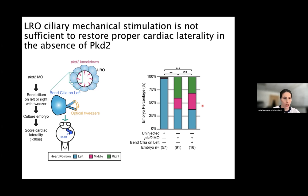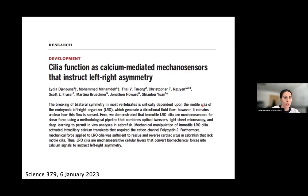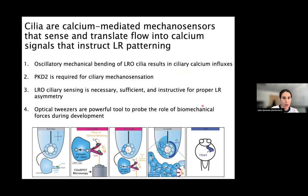For more details I invite you to check the publication we released last year. To summarize, our results highlight that cilia are calcium-mediated mechanosensors that sense and translate flow into calcium signals that instruct left-right patterning. We show that oscillatory mechanical bending of LRO cilia results in ciliary calcium influxes, that the polycystin-2 channel is required for ciliary mechanosensation, and that LRO ciliary sensing is necessary, sufficient, and instructive for proper lateral asymmetry. This also shows that optical tweezers are a powerful tool to probe the role of biomechanical forces during development.